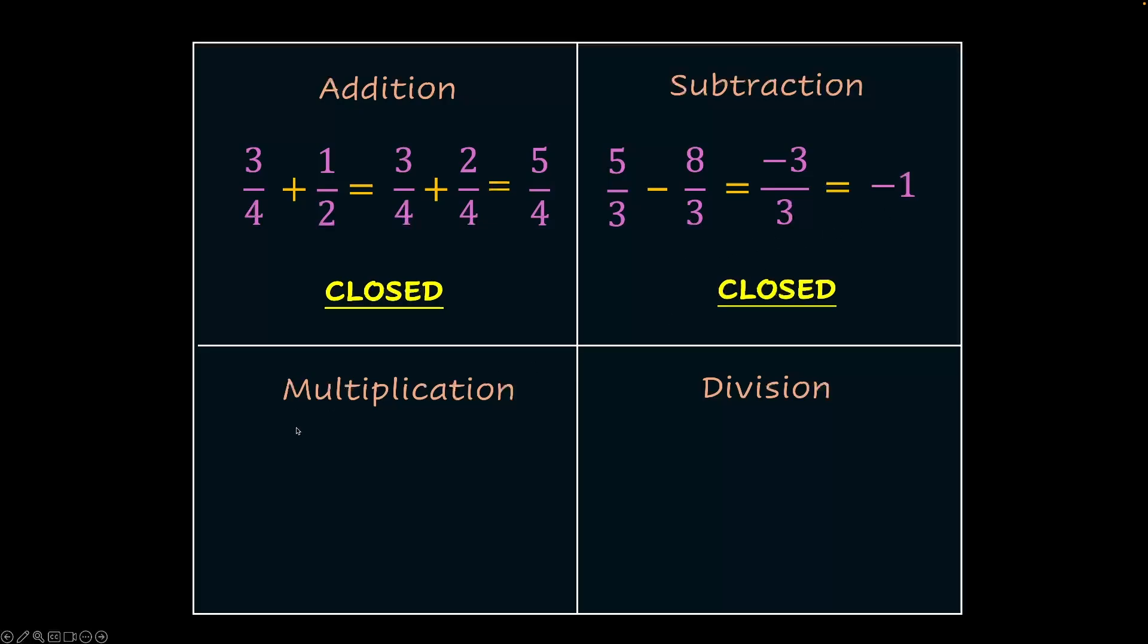The same goes for multiplication as well. Let's say you multiply 5 by 8 with minus 2 over 3. We end up with 5 to 10, 8 to 3 is 24. So, minus 10 by 24 and further simplifying that, you end up with minus 5 by 12 which is also clearly a rational number. So, multiplication is also a closed operation on rational numbers.